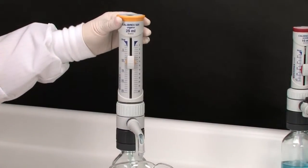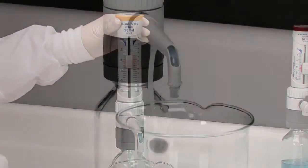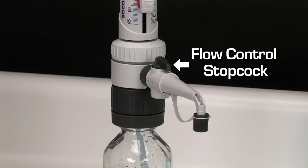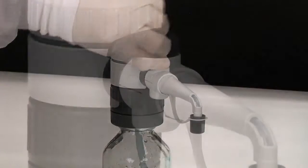Prime the dispenser until no air bubbles remain in the system. The transparent sleeve allows the user to visibly check for them. On the stopcock model, liquid can be returned into the bottle on the recycle position.